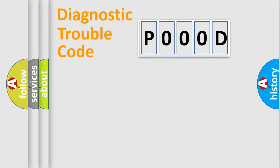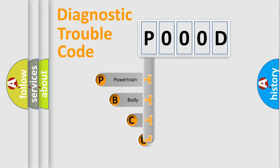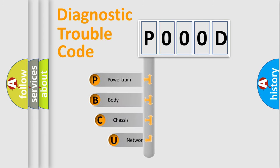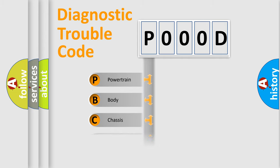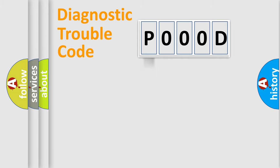Let's do this. First, let's look at the history of diagnostic fault code composition according to the OBD-2 protocol, which is unified for all automakers since 2000. We divide the electric system of an automobile into four basic units: Powertrain, Body, Chassis, and Network.